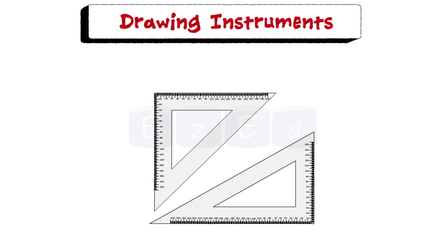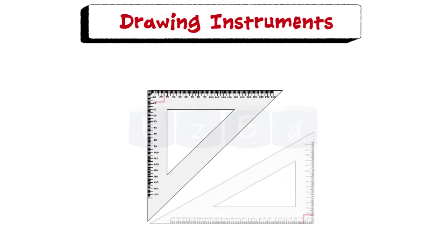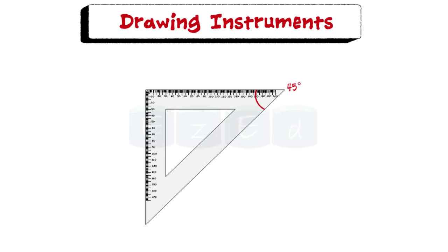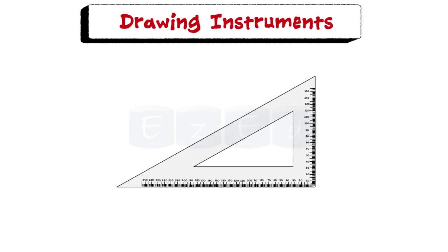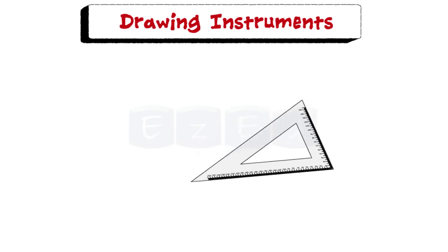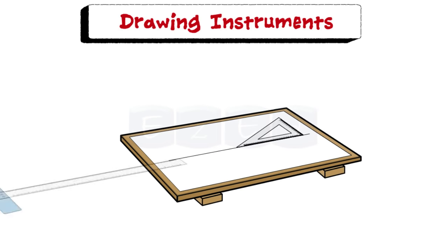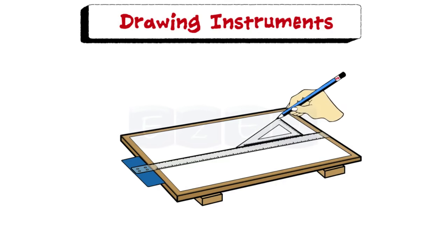Set square is triangular in shape with one of the angles as right angle. Two forms of the set square are generally used. One having angles 45, 45, and 90 degrees, and the other is 30, 60, 90. Set square in combination with t-square is used to draw lines at an angle.